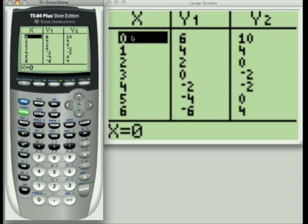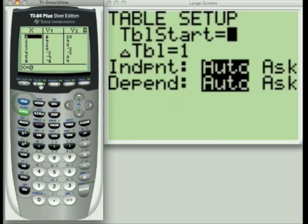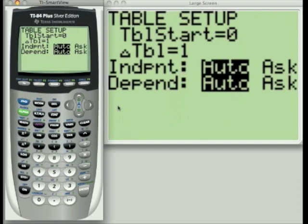And also that the table settings screen can only show seven values of x at one time with the corresponding y values for whatever equations I have entered in. So let's go back to the table settings screen. I hit second window, and change some of these settings to see what the effects are.